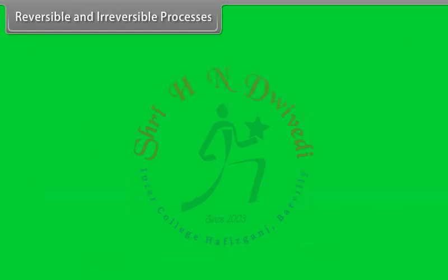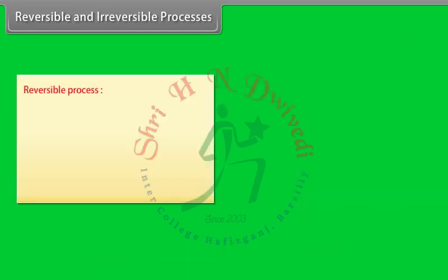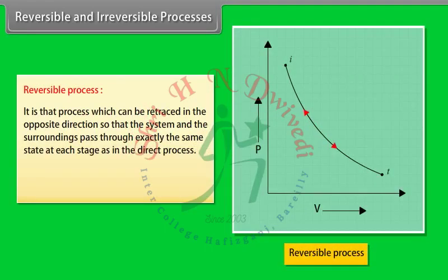A reversible process is one which can be retraced in the opposite direction so that the system and its surroundings pass through exactly the same states at each stage as in the direct process.